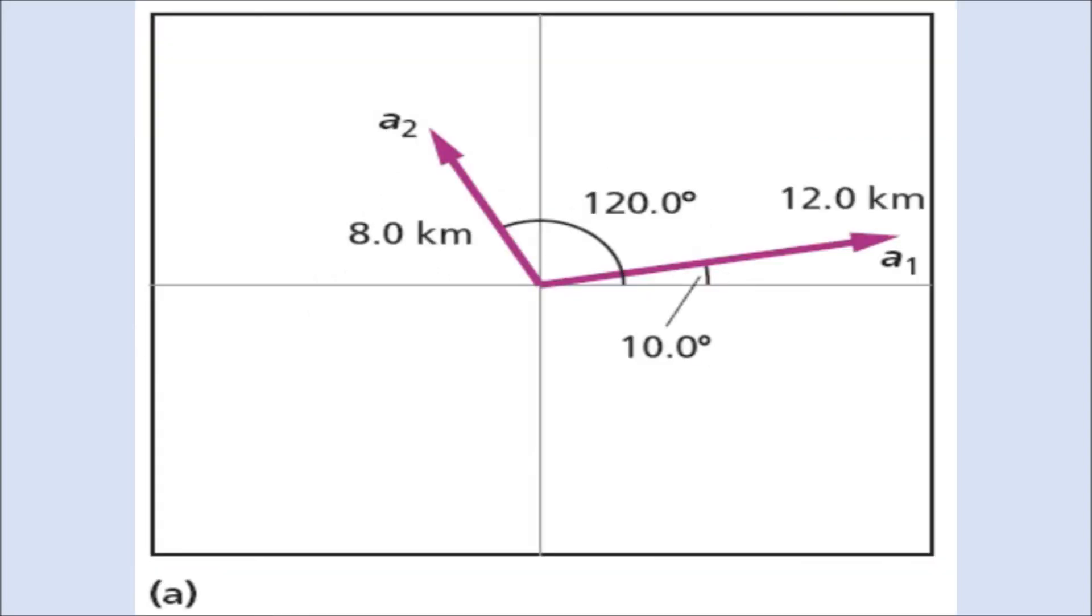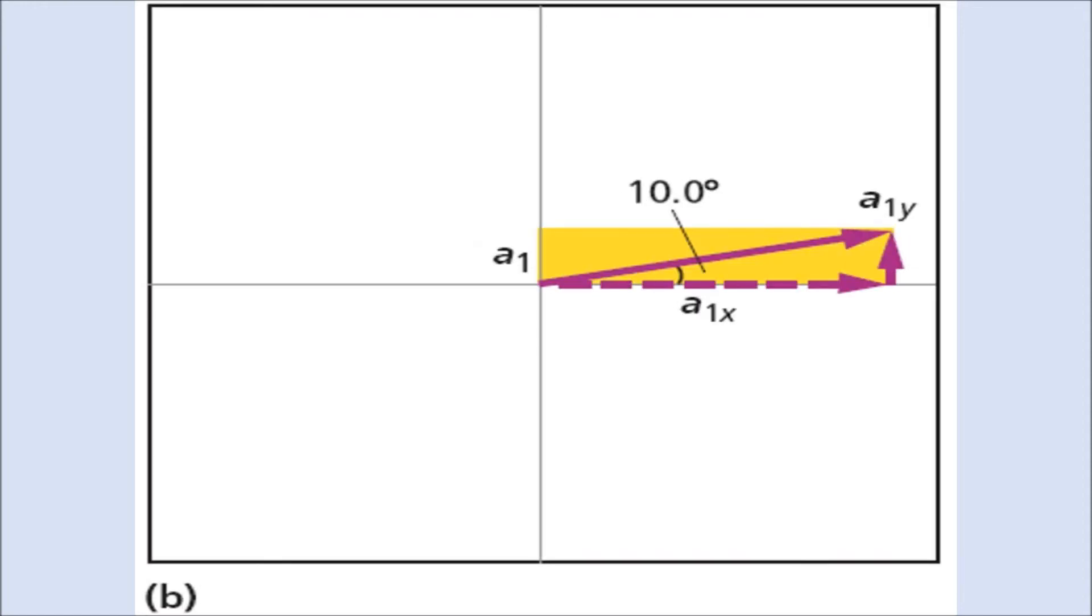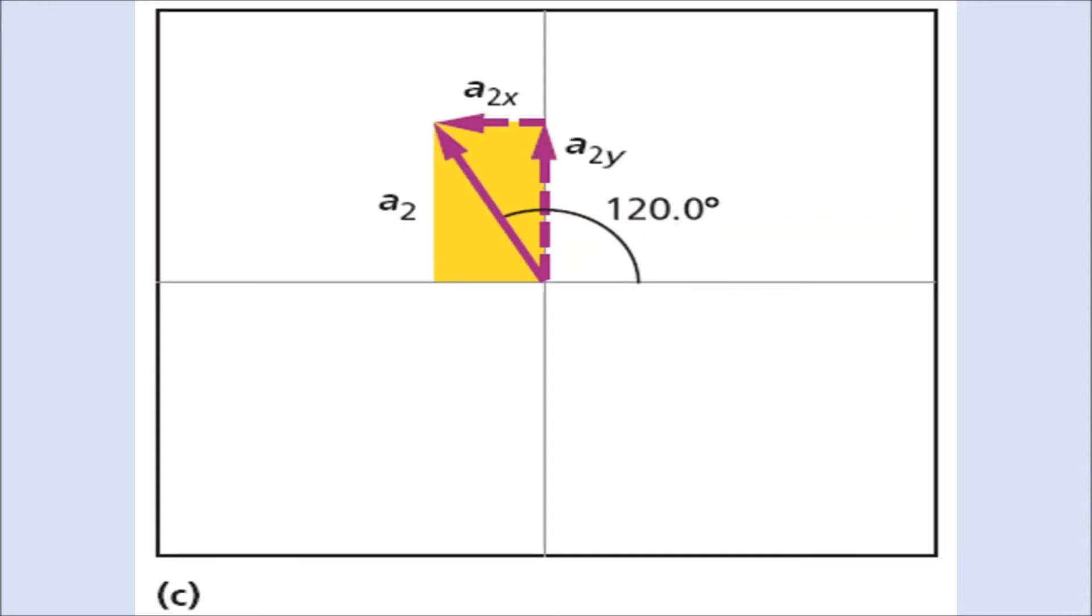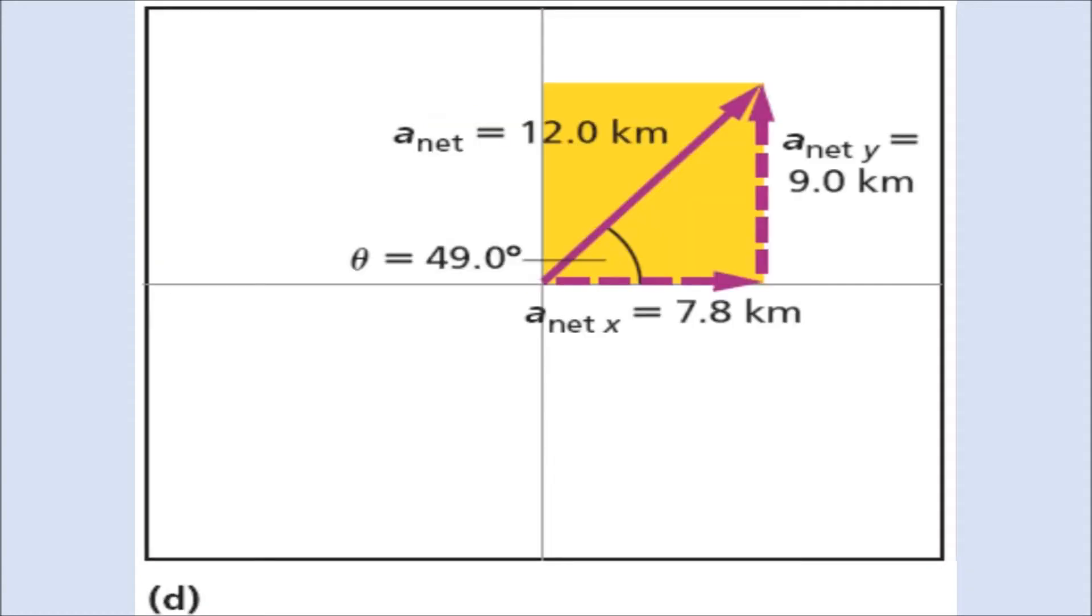Here are two vectors, 12 kilometers and 8 kilometers at the given angles. This should be second nature to you now. Remember that all angles we're going to solve relative to the x-axis. You break each vector down to its corresponding components, then you add the components, do the arc tangent of the sum of y and x and the Pythagorean theorem, and you get your resulting vector. Here it's going to be 12 kilometers and 49 degrees north of east.